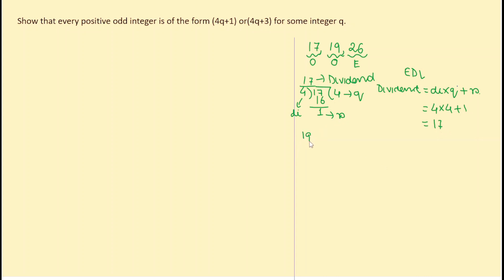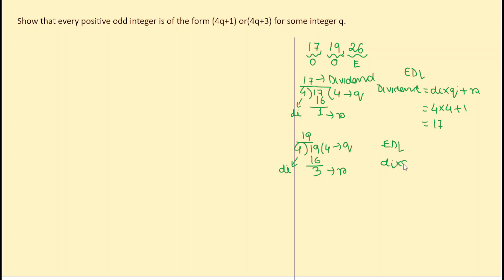For 19 ÷ 4: quotient is 4, remainder is 3. By Euclid's Division Lemma: 19 = 4×4 + 3. For the even number 26 ÷ 4: quotient is 6, remainder is 2. So 26 = 4×6 + 2.